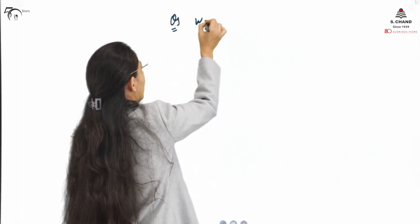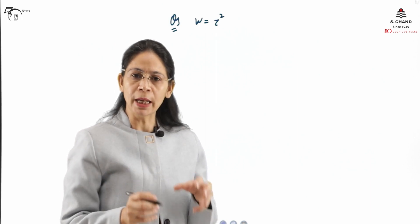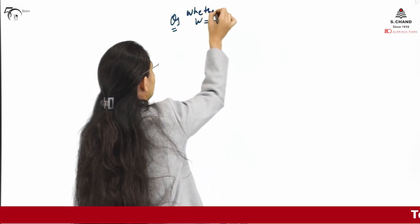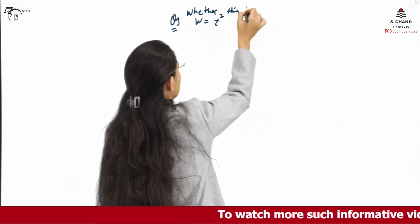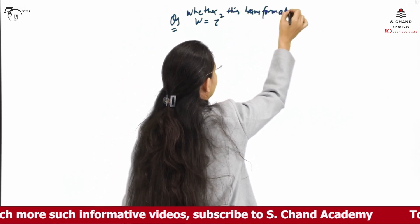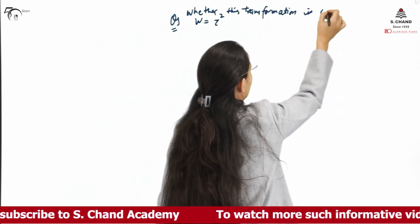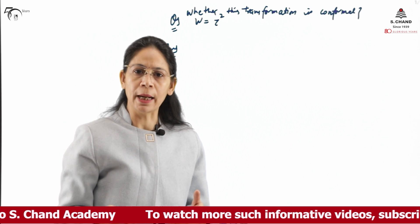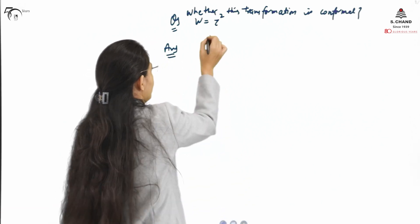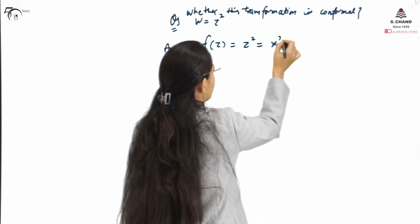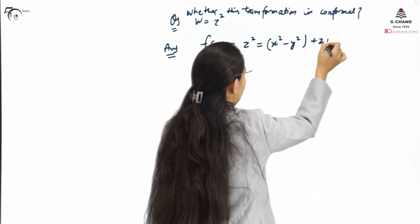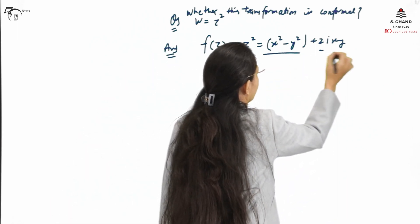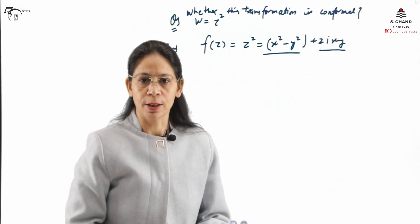In the previous part of the video we took one example W equals Z squared to show how a transformation takes place from the XY plane to the UV plane. We will now check whether this transformation is conformal or not. The condition for conformal mapping is that F(Z) should be analytic. Here F(Z) is Z squared, which resolves into real and imaginary parts as X squared minus Y squared plus 2i·XY. These are in polynomial form, so they are analytic.